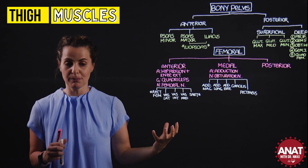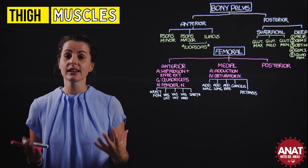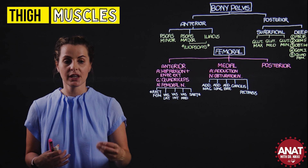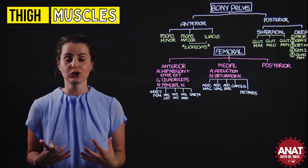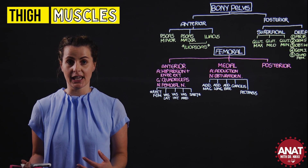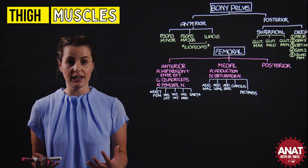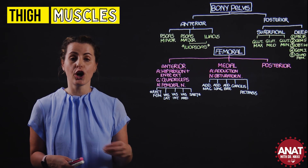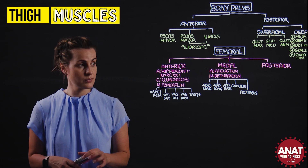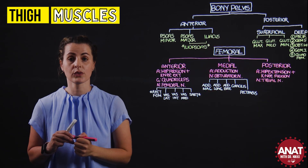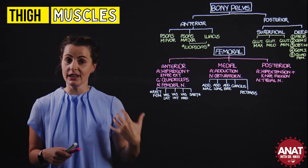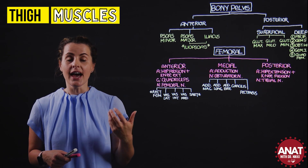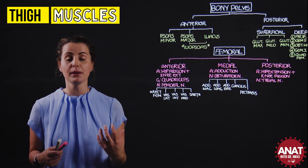In the posterior compartment we have the muscles classified as our hamstrings, consisting of three fairly large muscles. The common action of the hamstrings is to extend the hip and flex the knee. These muscles receive common innervation from the sciatic nerve — more specifically the tibial branch — with the exception of the short head of the biceps femoris. The three muscles, from medial to lateral, are the semitendinosus, which is superficial to the semimembranosus, and laterally the biceps femoris, which has two heads.